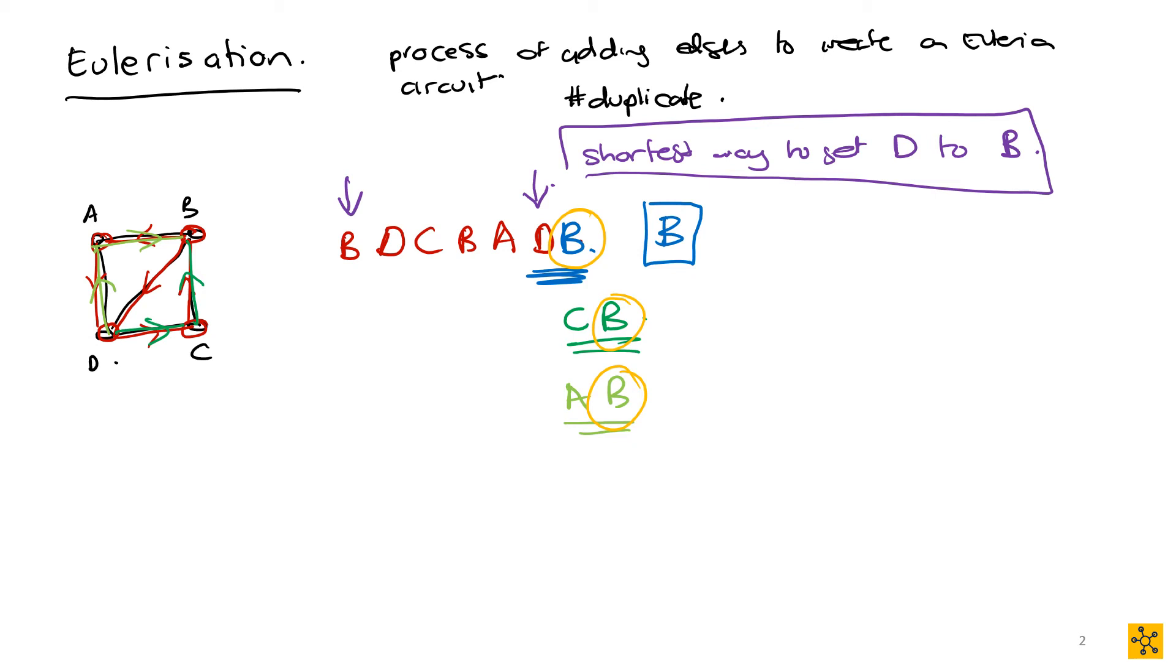The whole idea behind the Eulerian circuit is you only go through the edges once. So when you are creating an Eulerization, you really don't want to go against that kind of rule multiple times. You want to do it the least amount of time possible. So you look for the shortest way to get from the odd vertices to the other odd vertices. And we know how to find that out. We know how to work out the length of the shortest path between two vertices.